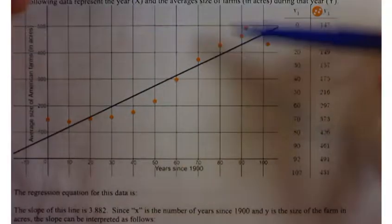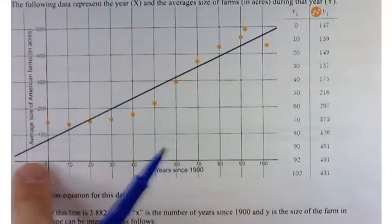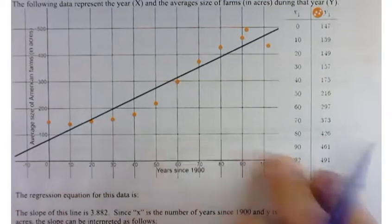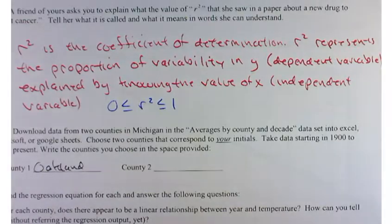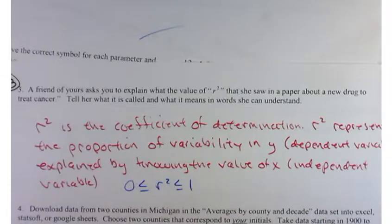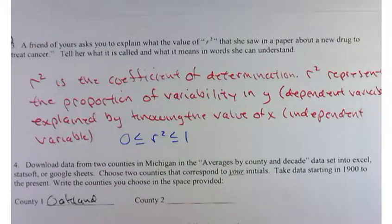The degree to which knowing the x value helps you know something about the y value, is what R-squared is. It's telling you the proportion of this variability, the variability in y, that's explained by knowing the variability in x, or by knowing the value of x.